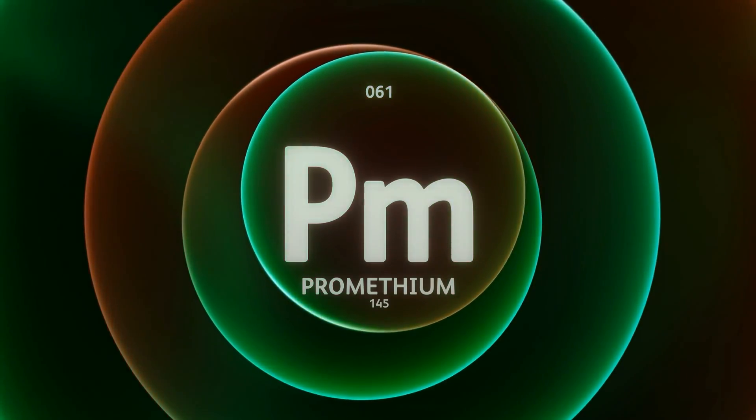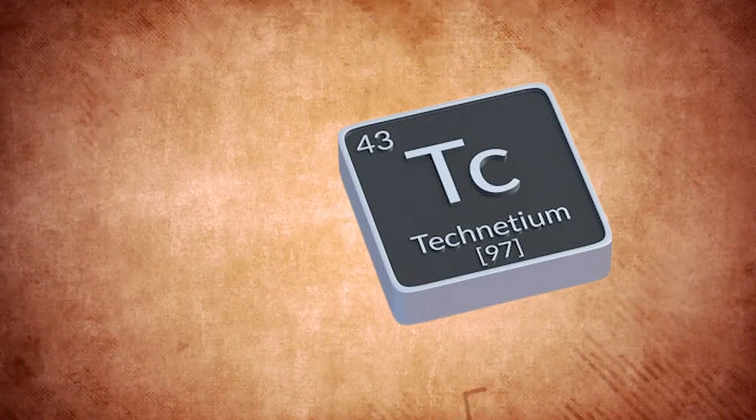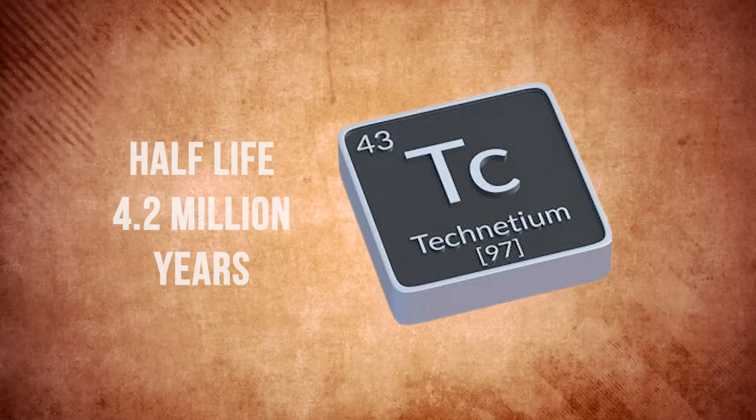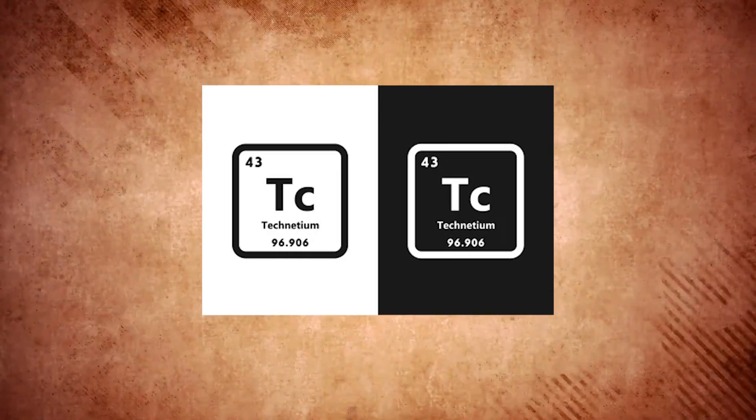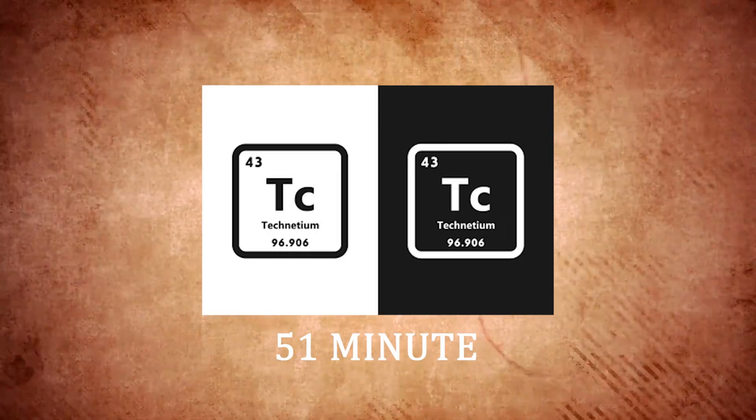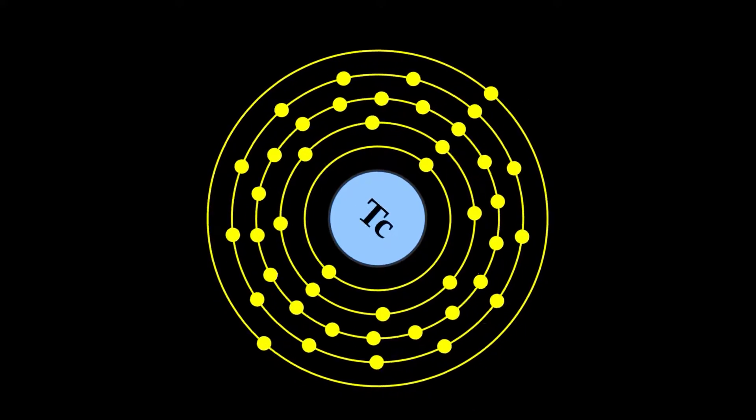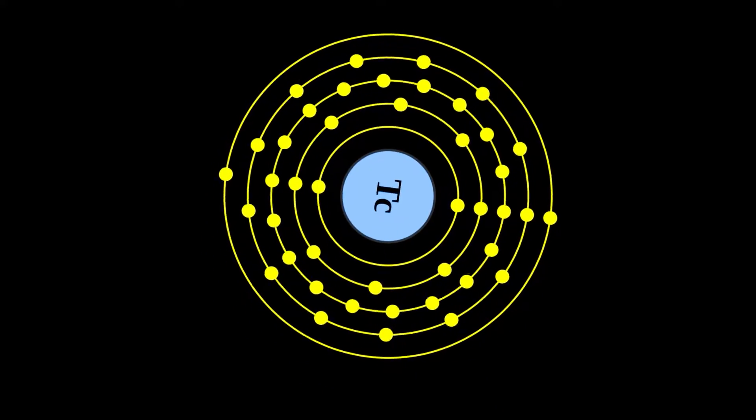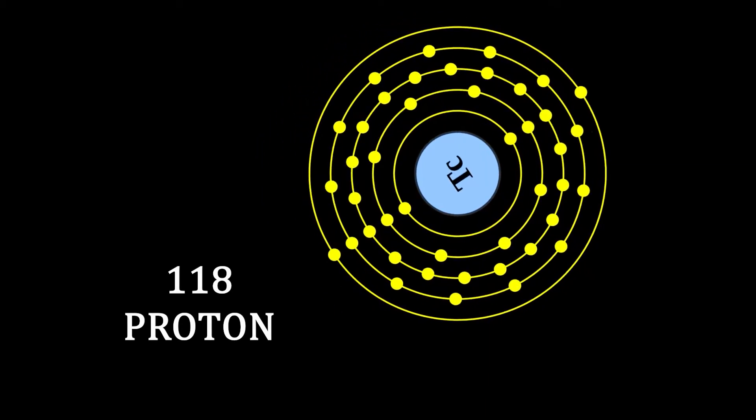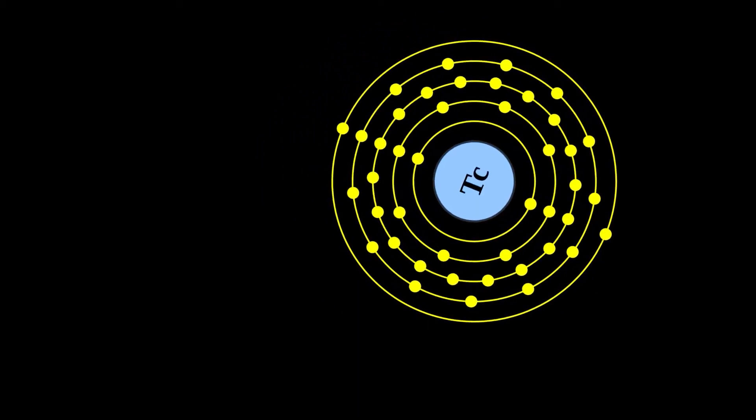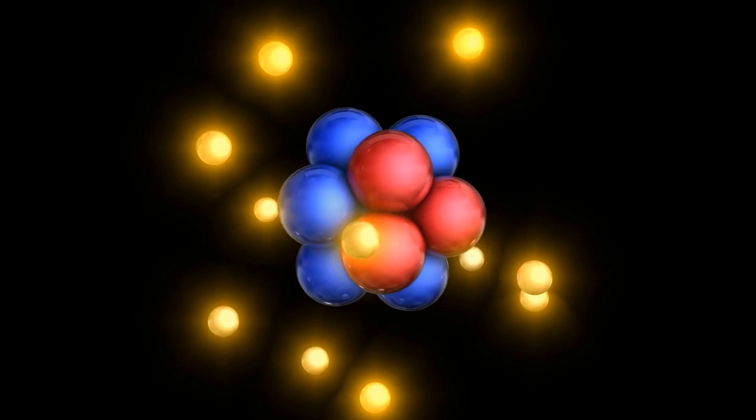There are varying degrees of instability. For example, technetium-97 has a half-life of 4.2 million years, while technetium-96 has a half-life of just 51 minutes. Generally, elements with larger atomic numbers have fewer stable isotopes and shorter half-lives. Elements with more than 118 protons decay so quickly that we've never managed to detect one in a lab.